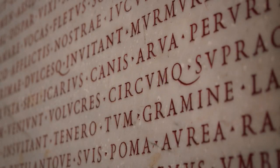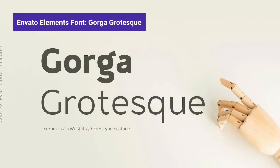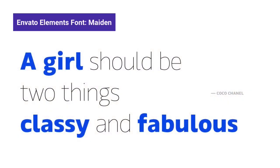Sans serif typefaces went through another evolution process in the 1970s. At this point, typefaces were lacking the human touch. Humanist fonts were inspired by traditional serifs and calligraphy. Gill Sans, for instance, included similar forms to those found in Helvetica, but it's less geometric. Humanist sans serifs were a response to the overly-used neo-grotesque style, making the typeface friendlier and more relaxed.